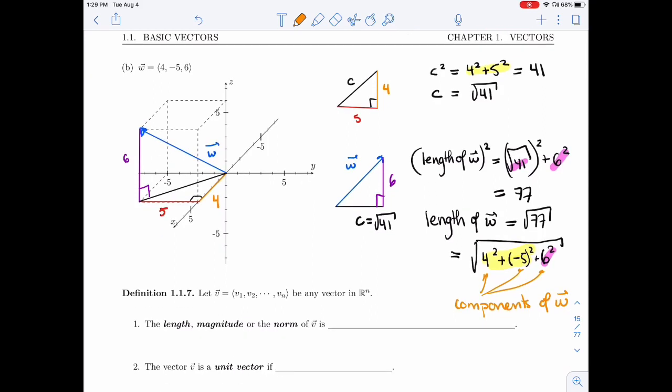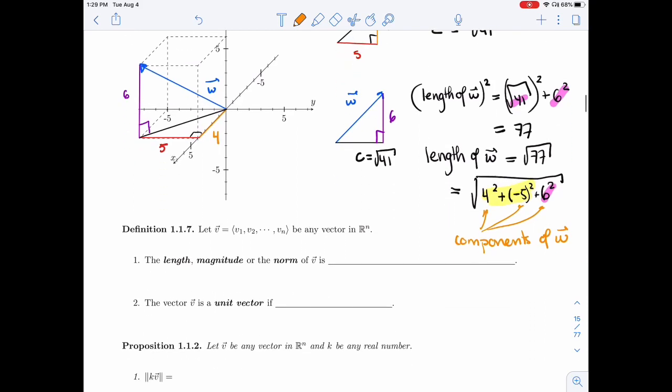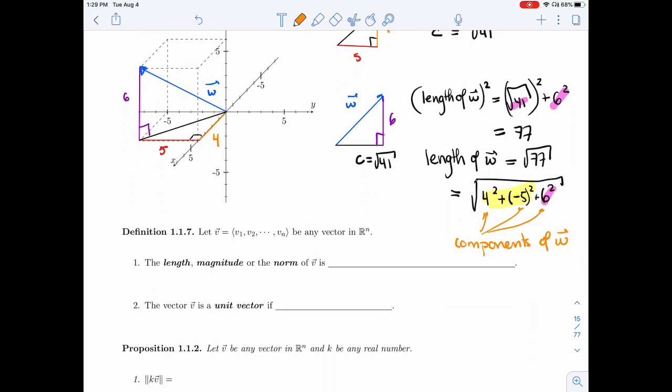And you can see that this will work for any dimension as long as the axes are perpendicular, which they are. And so we're ready to define what the length of a vector in Rn is. So this is definition 1.1.7.